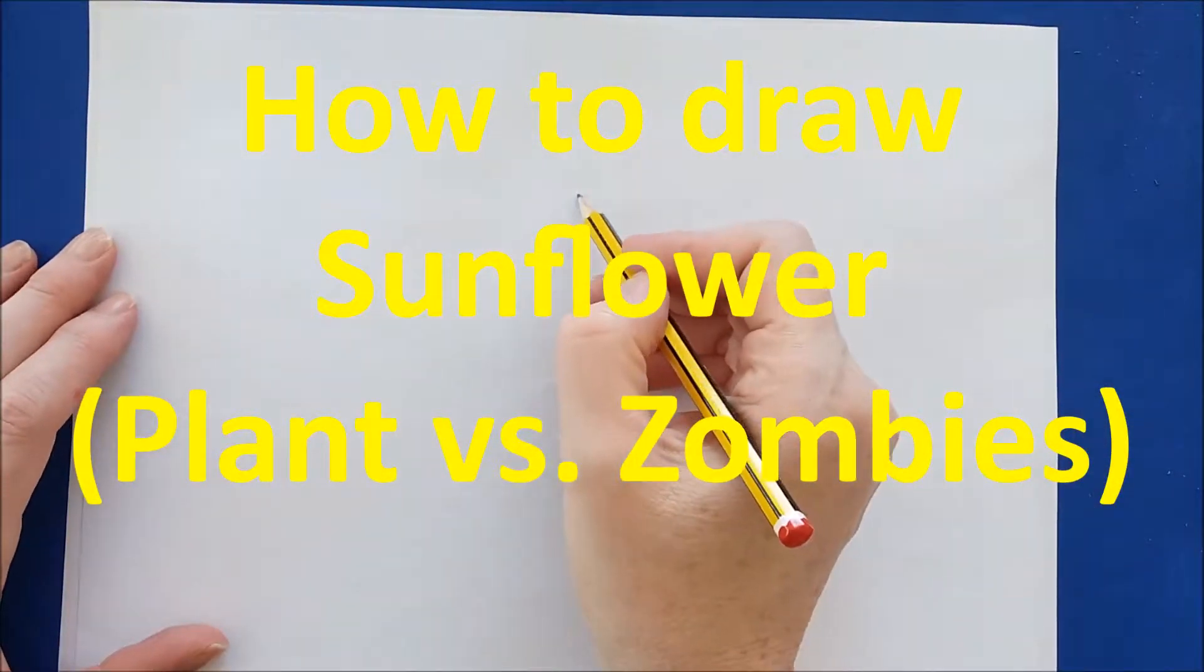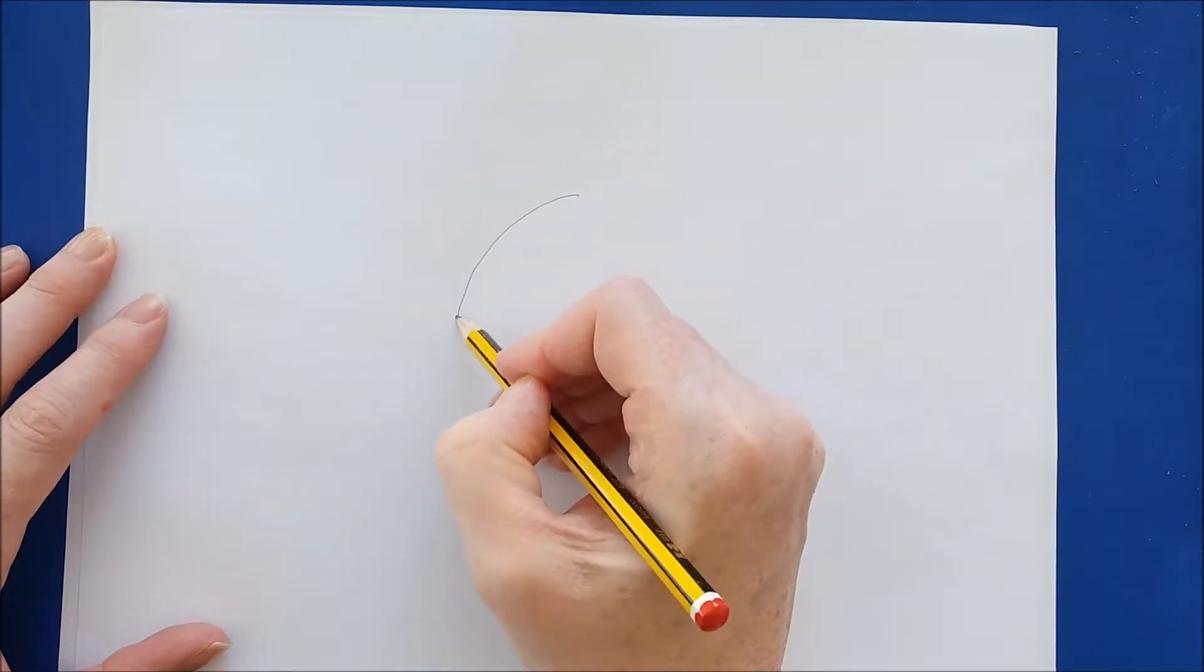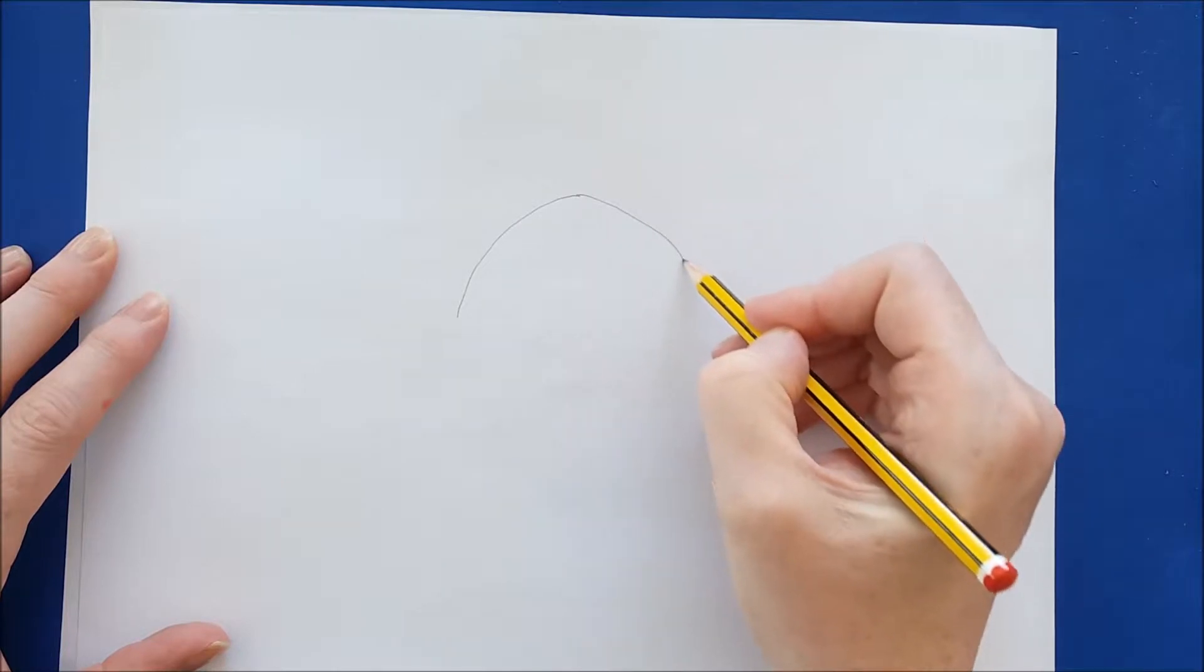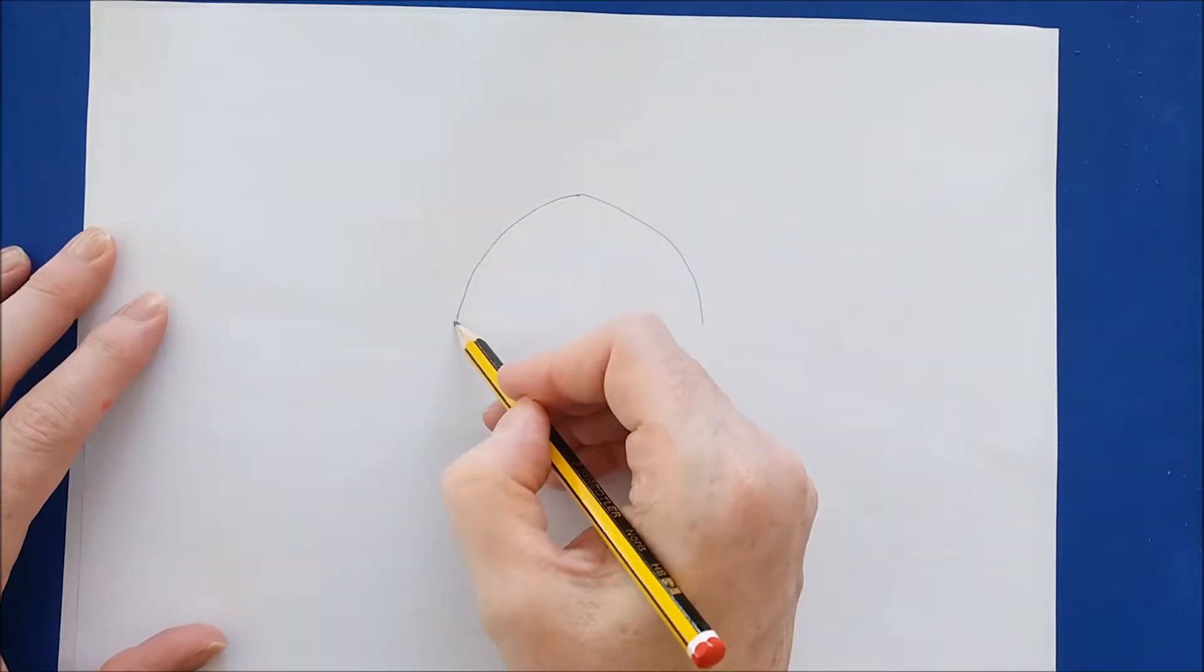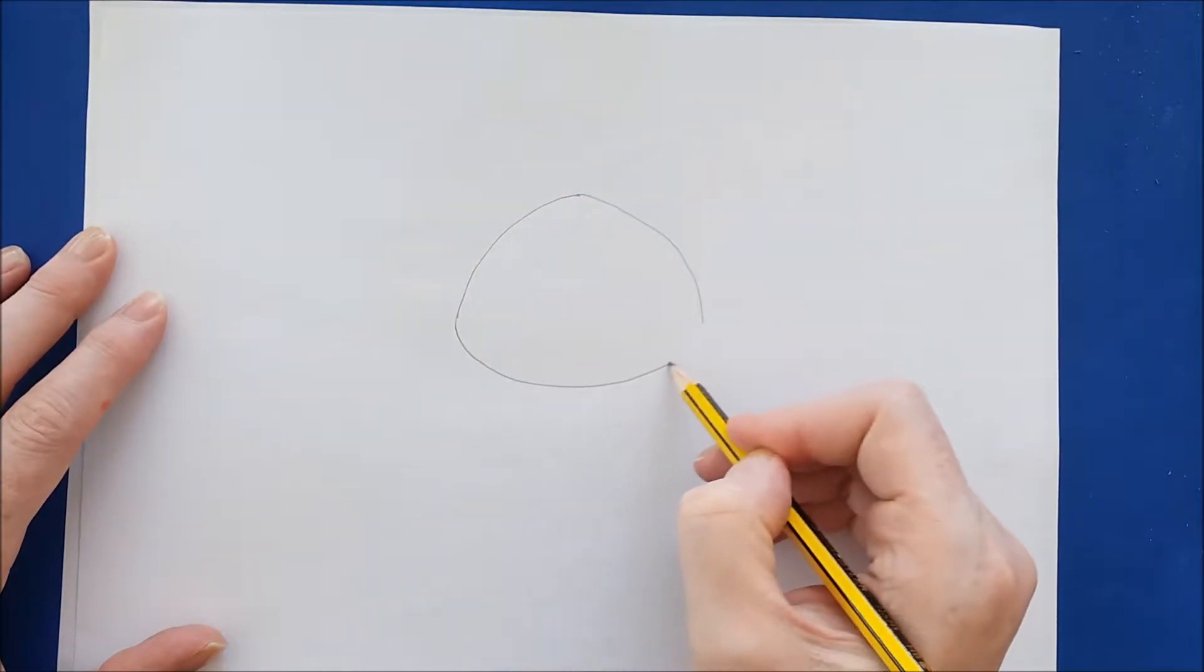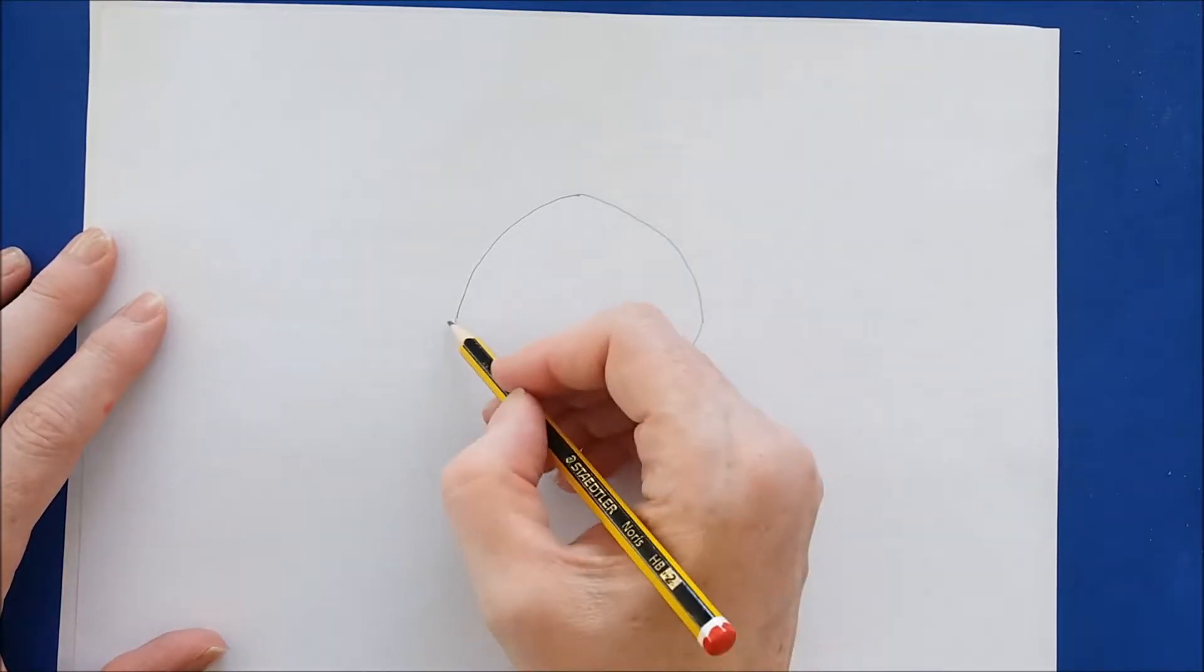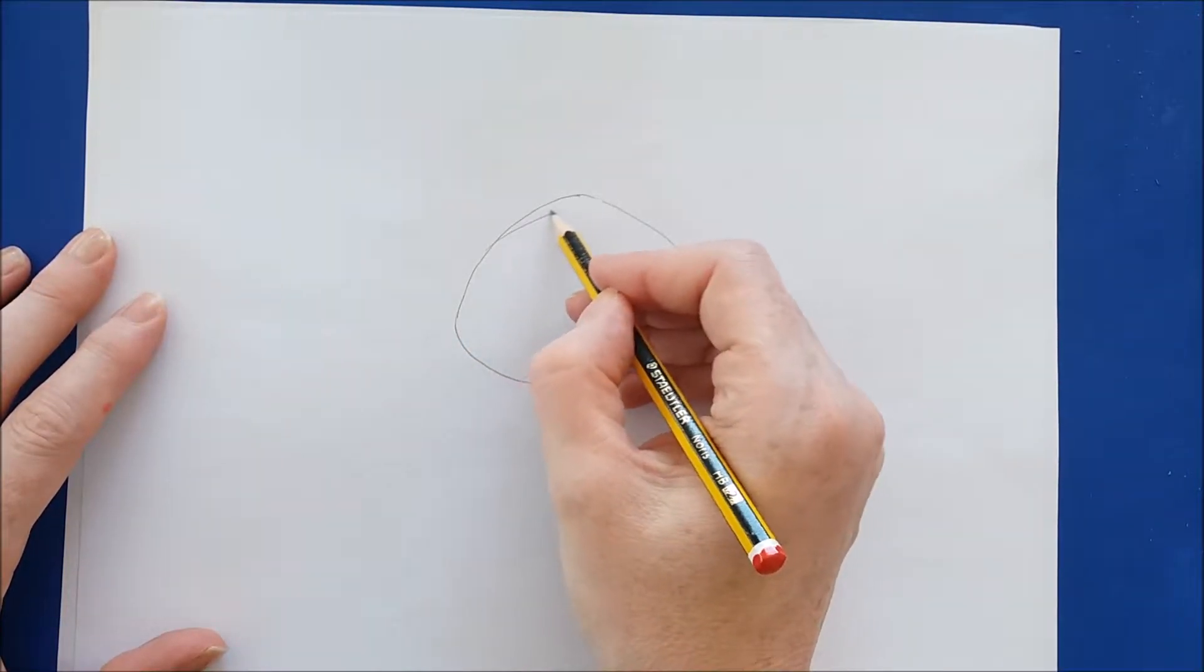Welcome back everyone. Today I'm drawing sunflower from Plants and Zombies. So let's start by drawing a dome shape and then connecting it by a curving line at the bottom. This is going to be the face of sunflower.